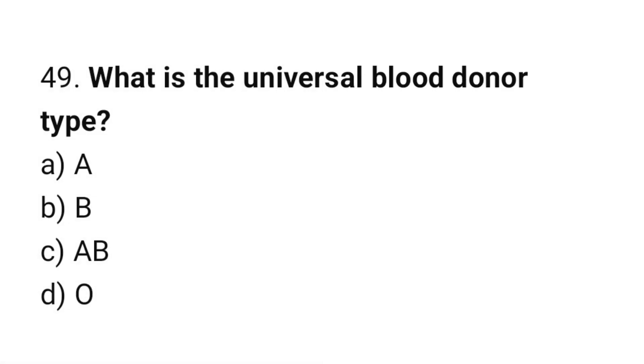Question number 49: What is the universal blood donor type? The correct answer is D: O negative.